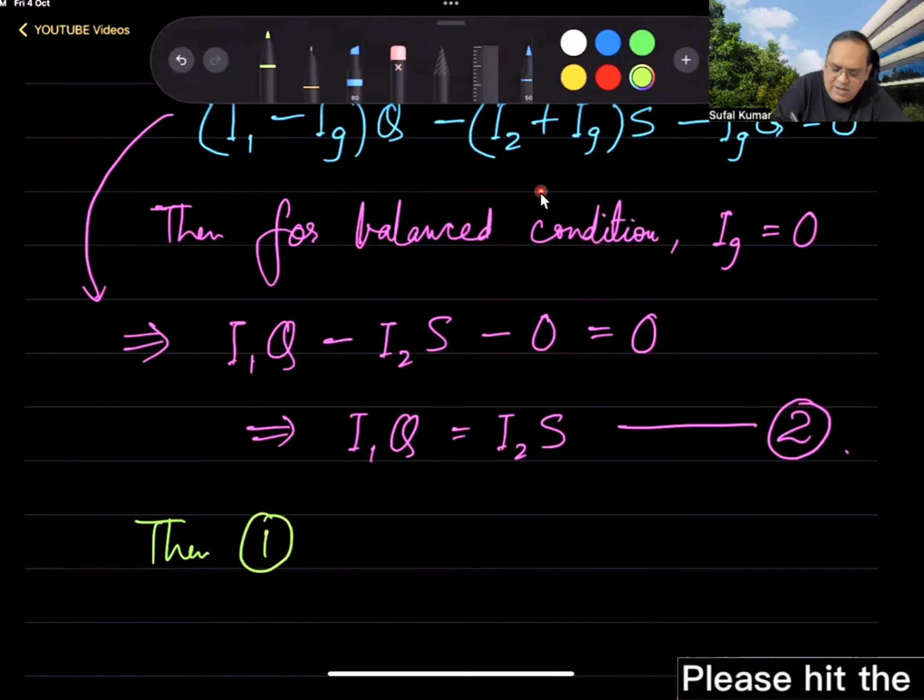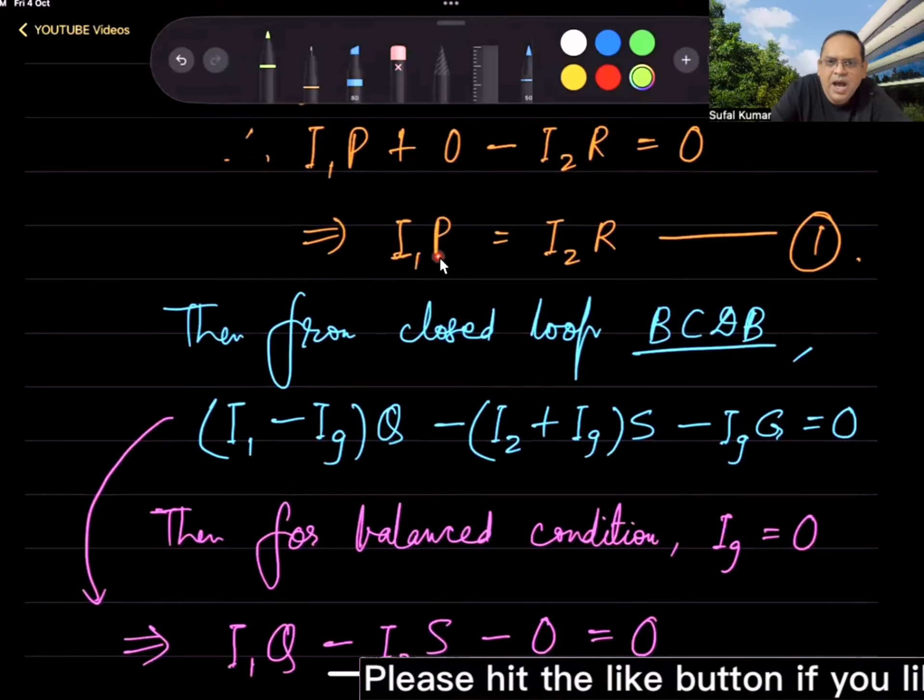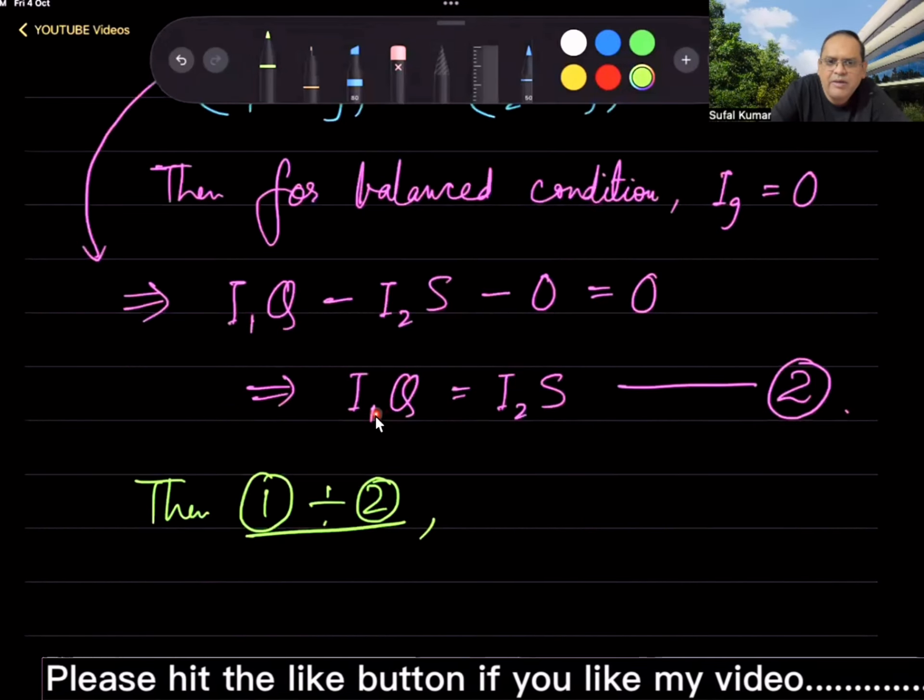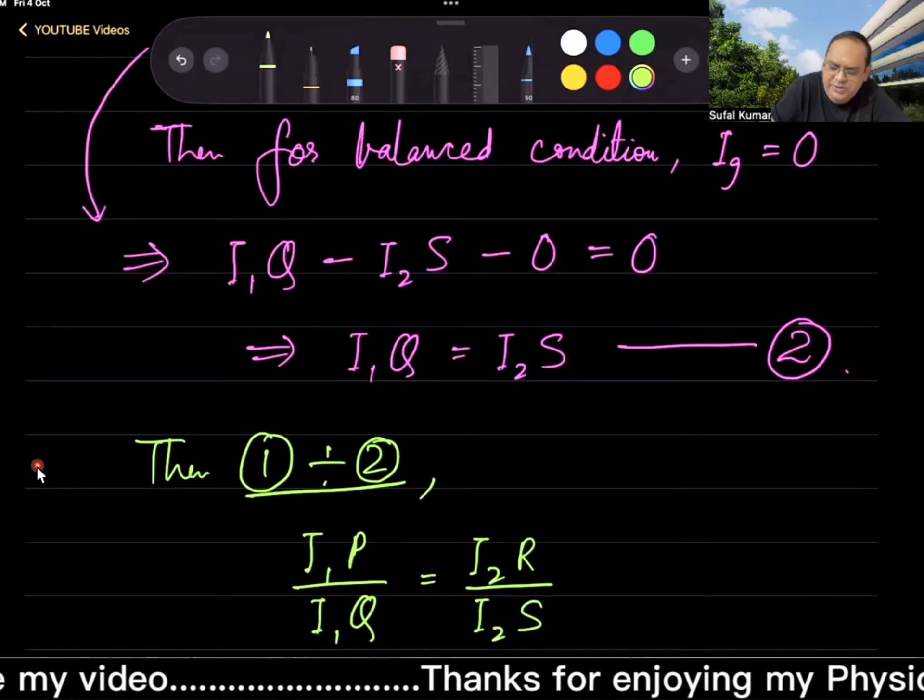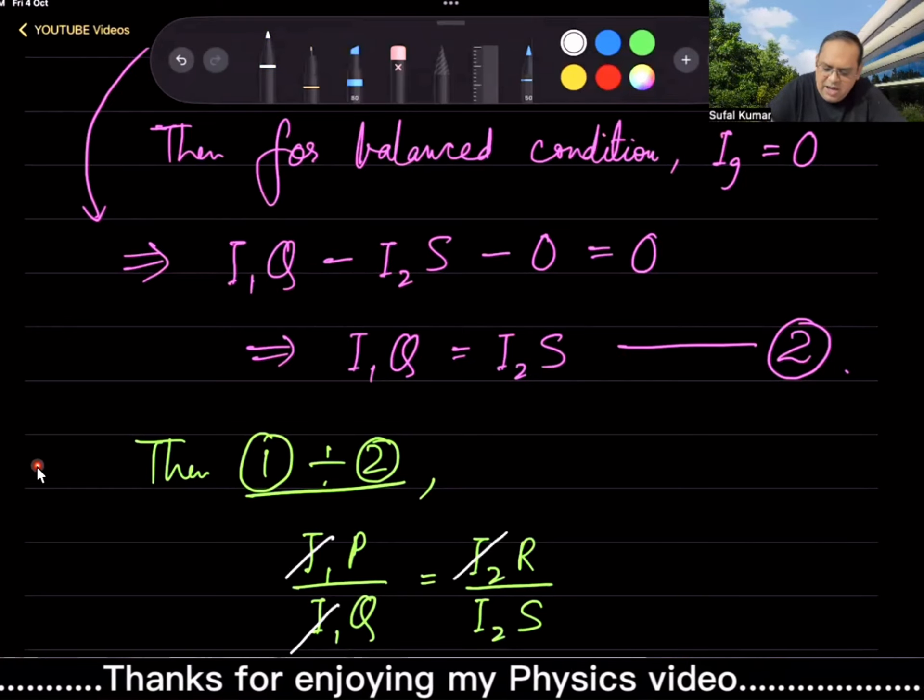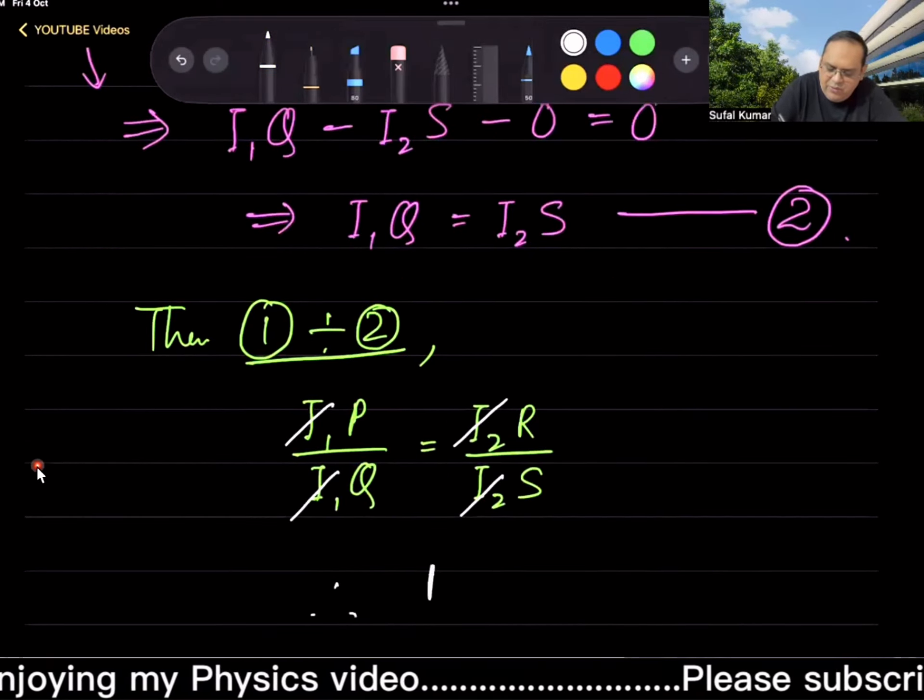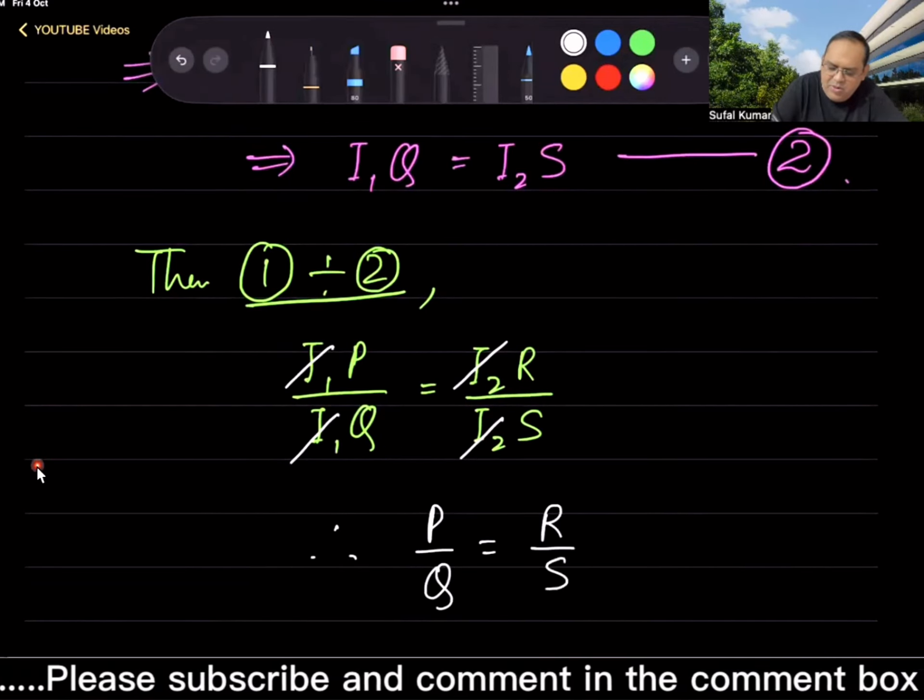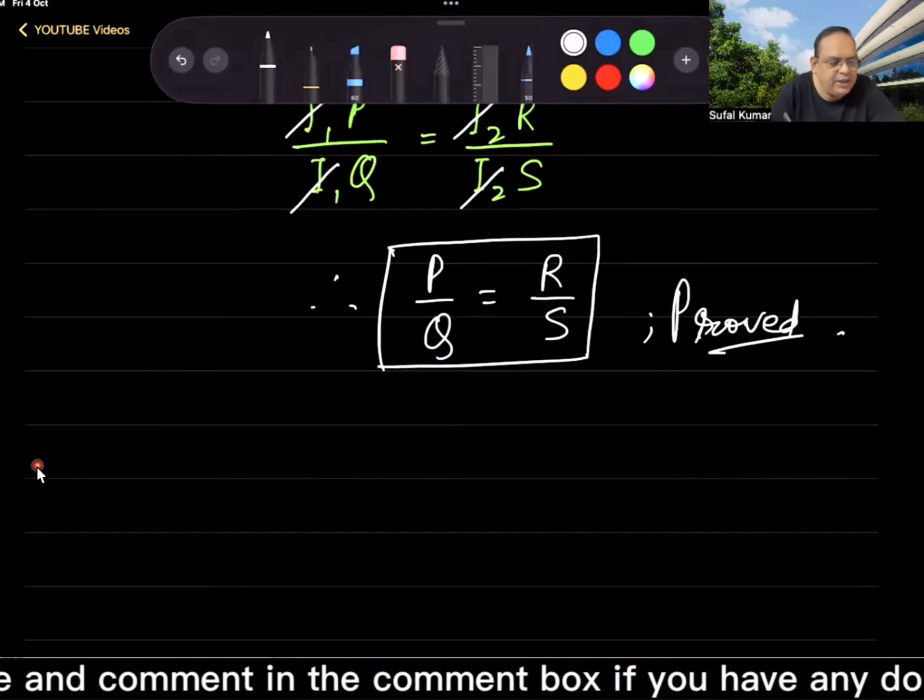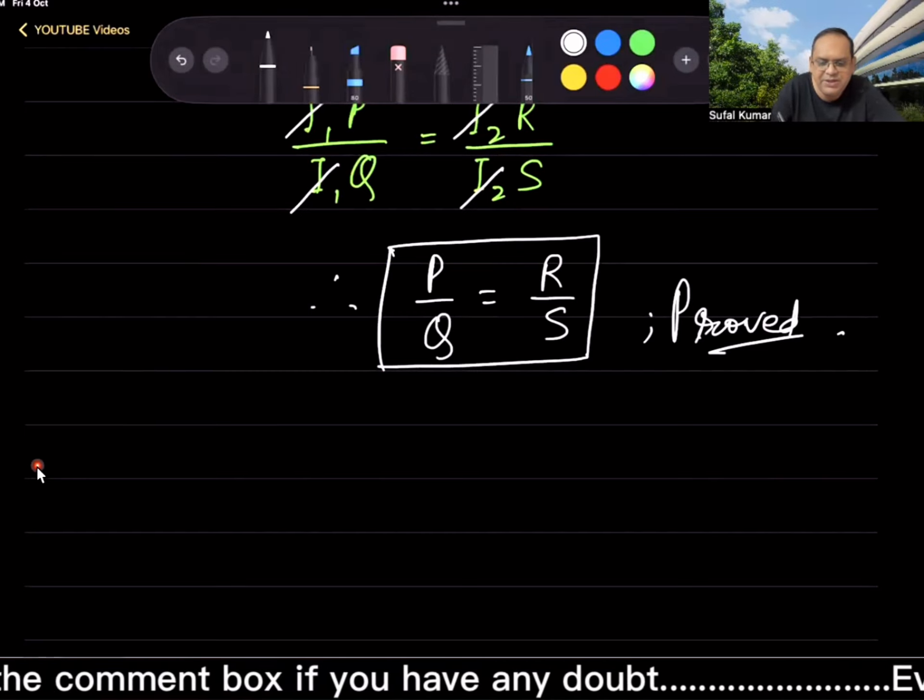Since current is opposite with respect to our traversing direction of the circuit, I₂R minus is equal to zero because this closed loop has no cell or battery. For balance condition, Ig = 0, therefore I₁P + 0 - I₂R = 0. It implies that I₁P = I₂R. This is equation number one. For loop BCDB: I₁ - Ig times Q, minus I₂ + Ig times S, minus Ig times G = 0. For balance condition, Ig = 0, so I₁Q = I₂S. This is equation number two. Dividing equation 1 by equation 2: I₁P/I₁Q = I₂R/I₂S. I₁ cancels, I₂ cancels, therefore P/Q = R/S, proved.